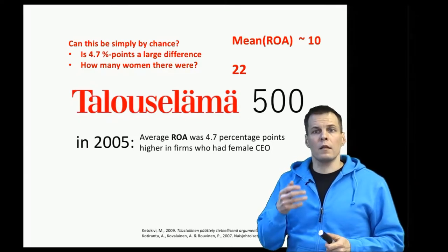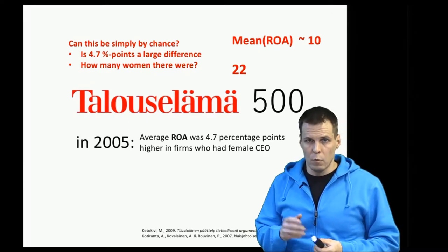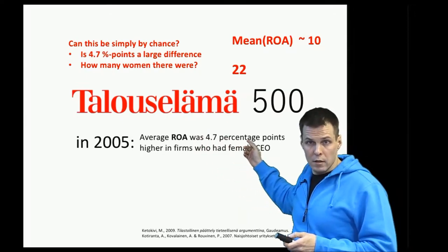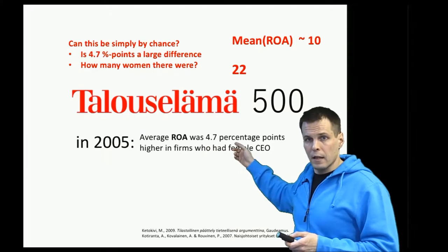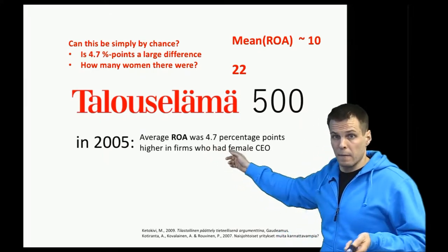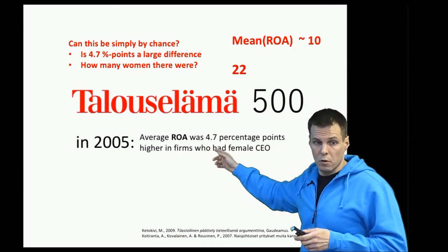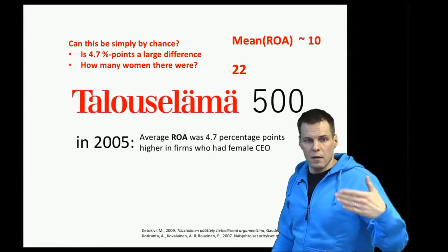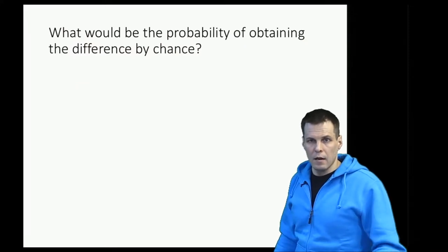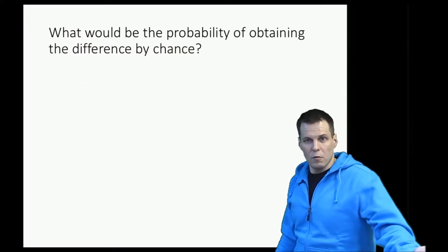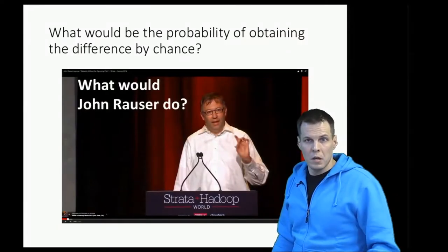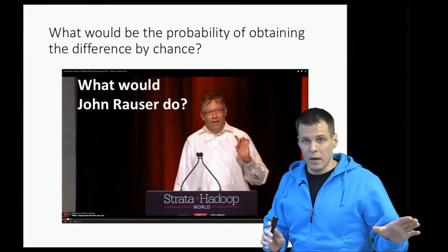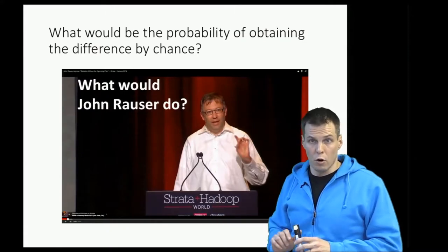The question of statistical inference is: is this return on assets difference of 4.7 percentage points large enough that we can conclude there probably is a systematic difference, and this is not due to sampling fluctuations only? We have to ask: what would be the probability of getting this kind of difference by chance only?